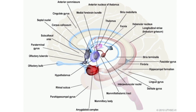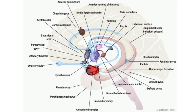The caudate nucleus receives fibers from the cingulate gyrus and the intralaminar nuclei of the thalamus. The brainstem reticular formation receives fibers from the hippocampus and the cingulate gyrus.